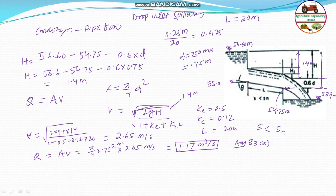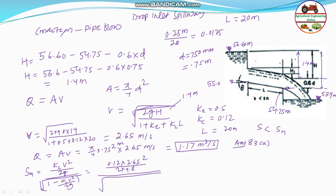For the second part, the natural slope S_N of the spillway is given by: S_N = K_c × (V²/2g) divided by (1 minus square root of (1 minus K_c × V²/2g)). Since the denominator term is very small and close to 1, we calculate: S_N = 0.12 × (2.65²) / (2 × 9.8) / (2 × 9.8) = 0.0439.